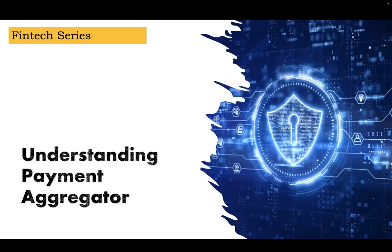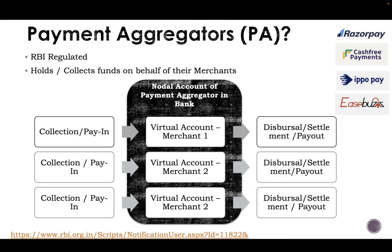Let's say you want to make a payment to someone. What you do is go to your net banking, add them as a beneficiary, and do an NEFT — or in case of UPI, you just put in the UPI address and make a transaction. That's a normal flow. But what if you want to make a payout to two lakh people in one go? That's where the role of a payment aggregator comes in.